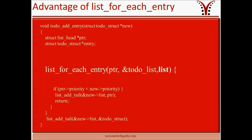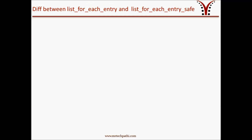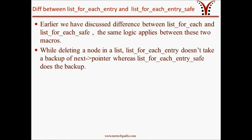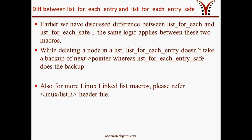The difference between list_for_each_entry and list_for_each_entry_safe follows the same logic as list_for_each vs list_for_each_safe. While deleting a node, list_for_each_entry does not take a backup of the next pointer, whereas list_for_each_entry_safe does. Apart from the macros discussed, there are various Linux linked list macros available in the kernel header file list.h. Please refer to that file for more information. Thanks for watching.